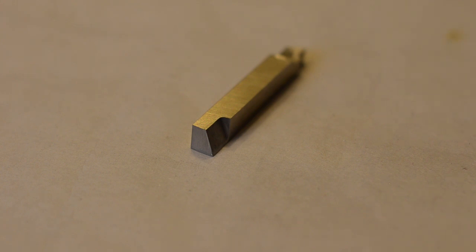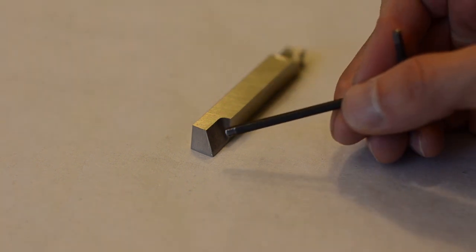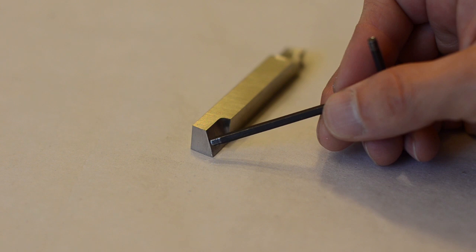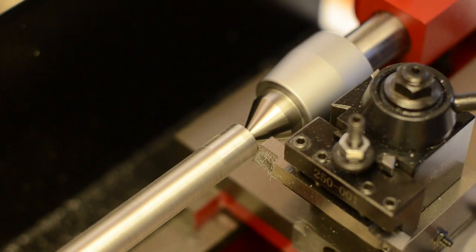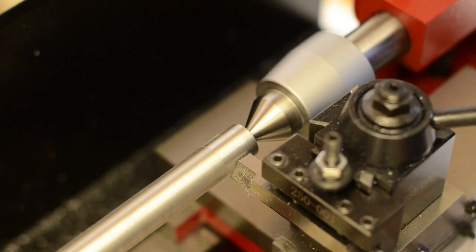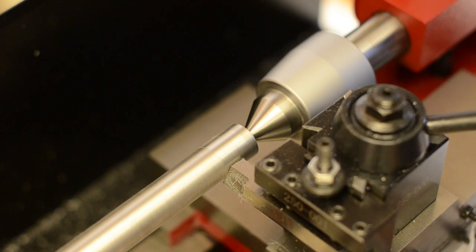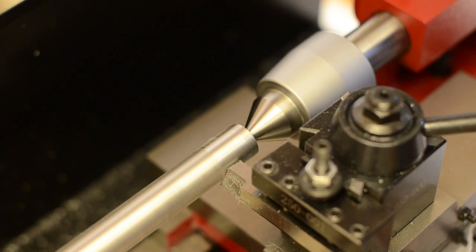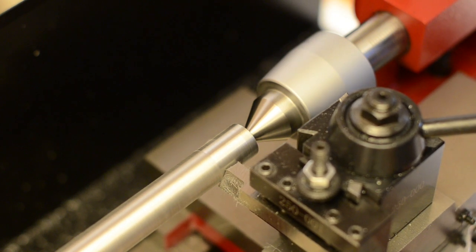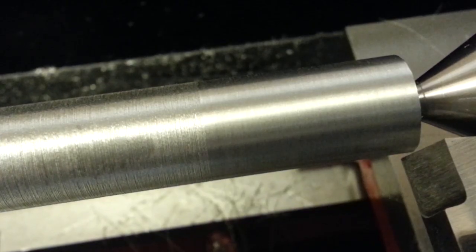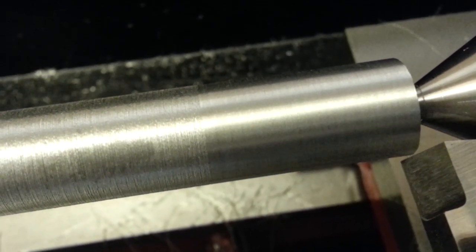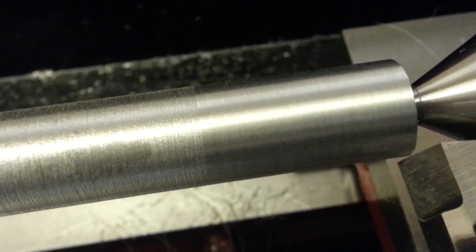Here's the finish tool and this slanted edge here is what contacts the workpiece. The right side is the vertical shear tool and the left side is the regular.